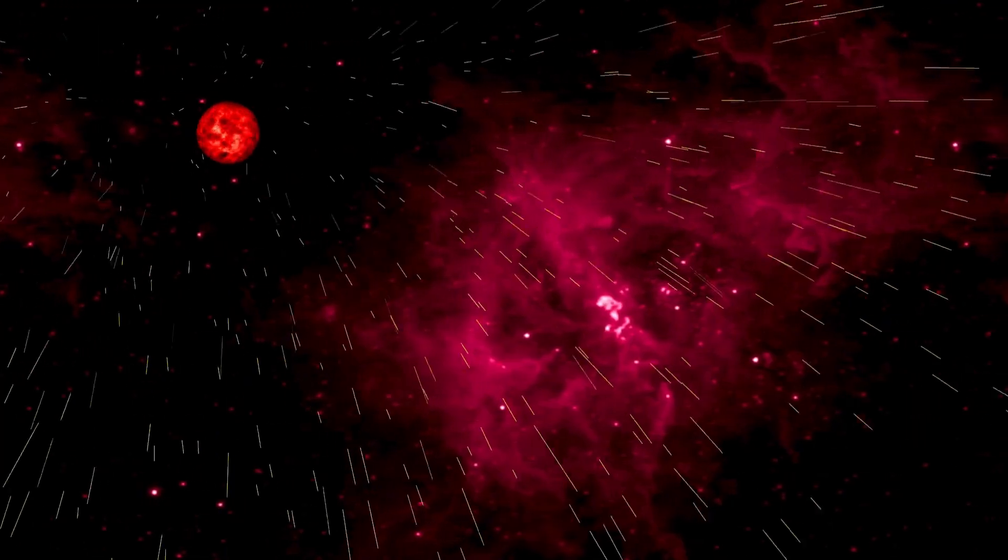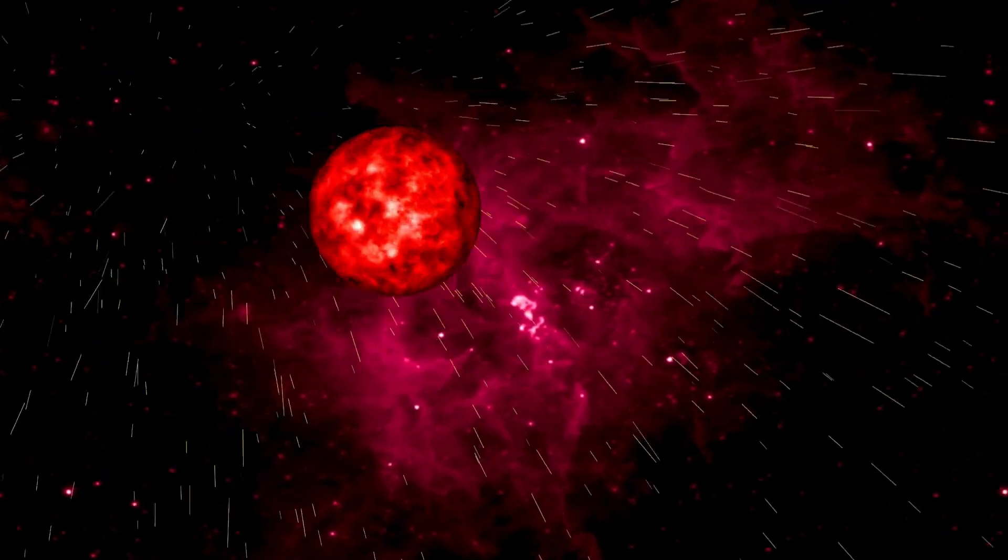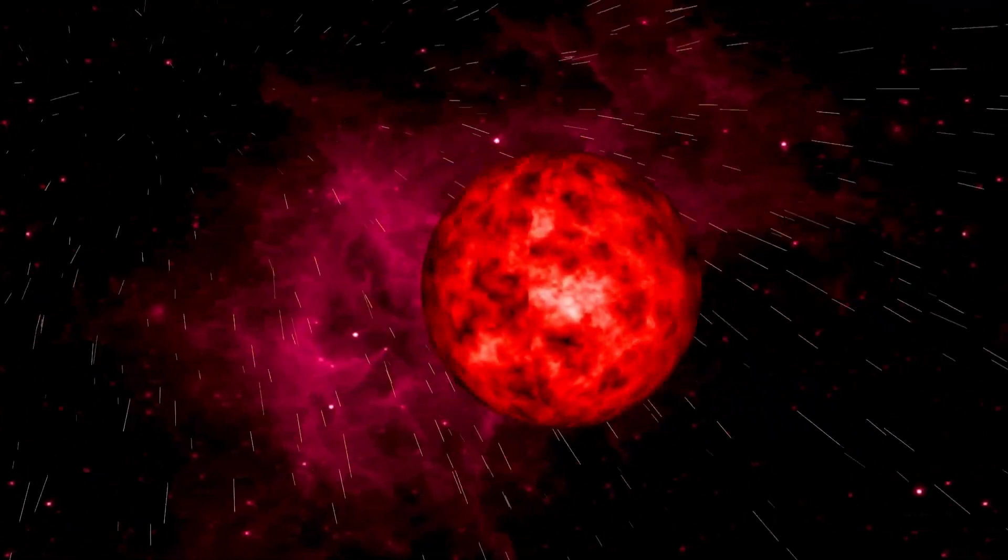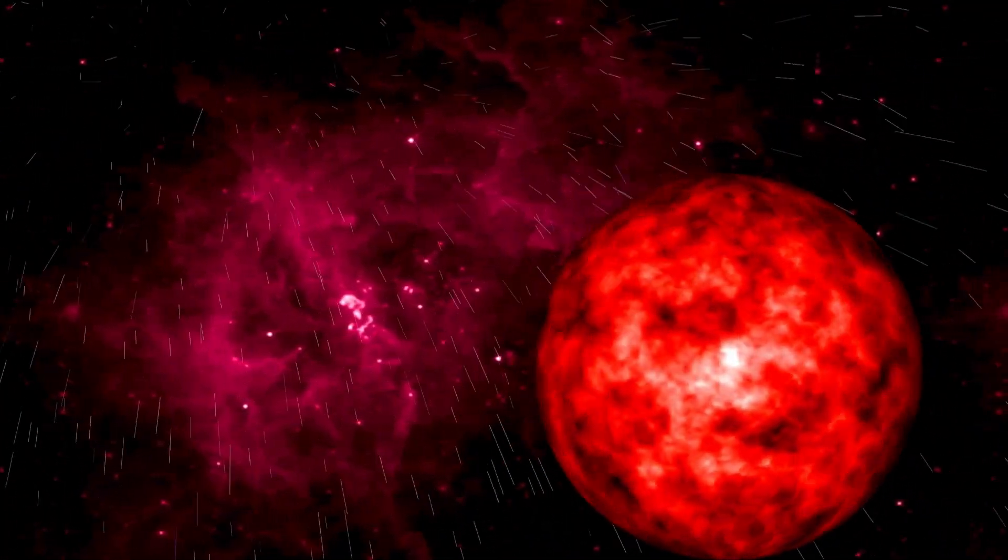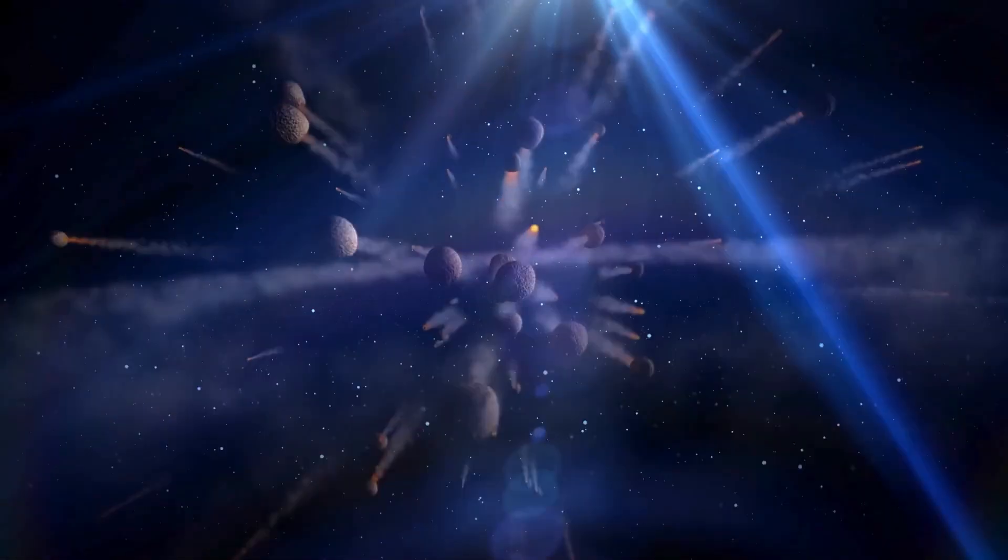Betelgeuse's impending explosion is anticipated to be a type 2 supernova, a specific kind of stellar explosion caused by the collapse of a massive star's core. This collapse releases neutrinos and radiation, creating a shock wave that obliterates the star. The blast will be so bright that it could be visible from Earth without telescopes, potentially outshining the moon in the night sky for weeks or months.